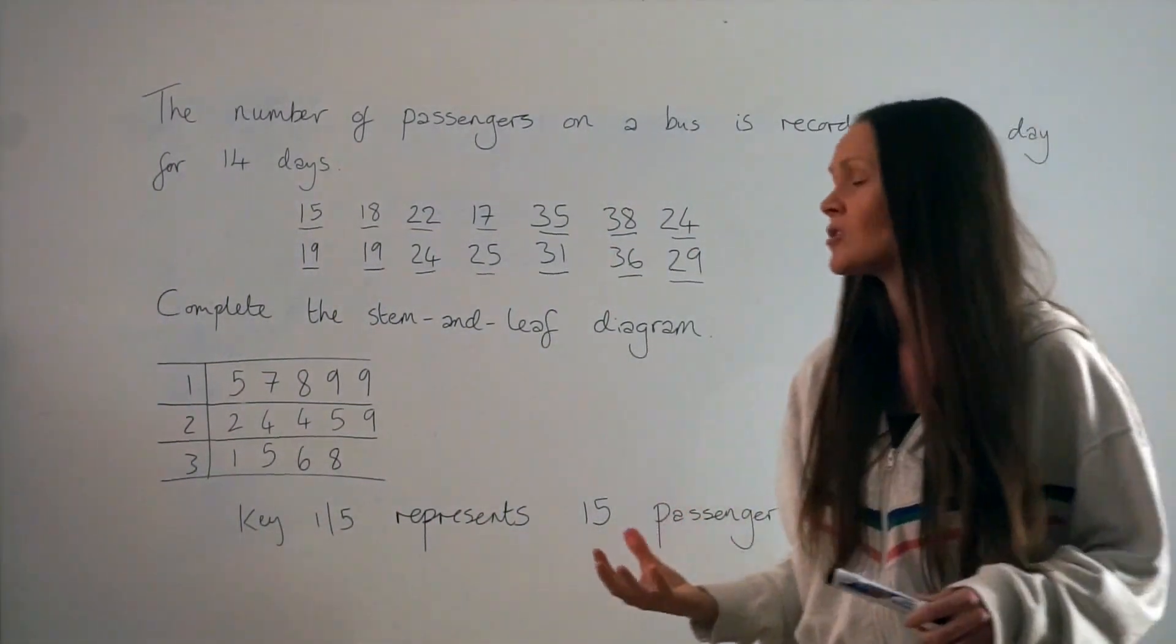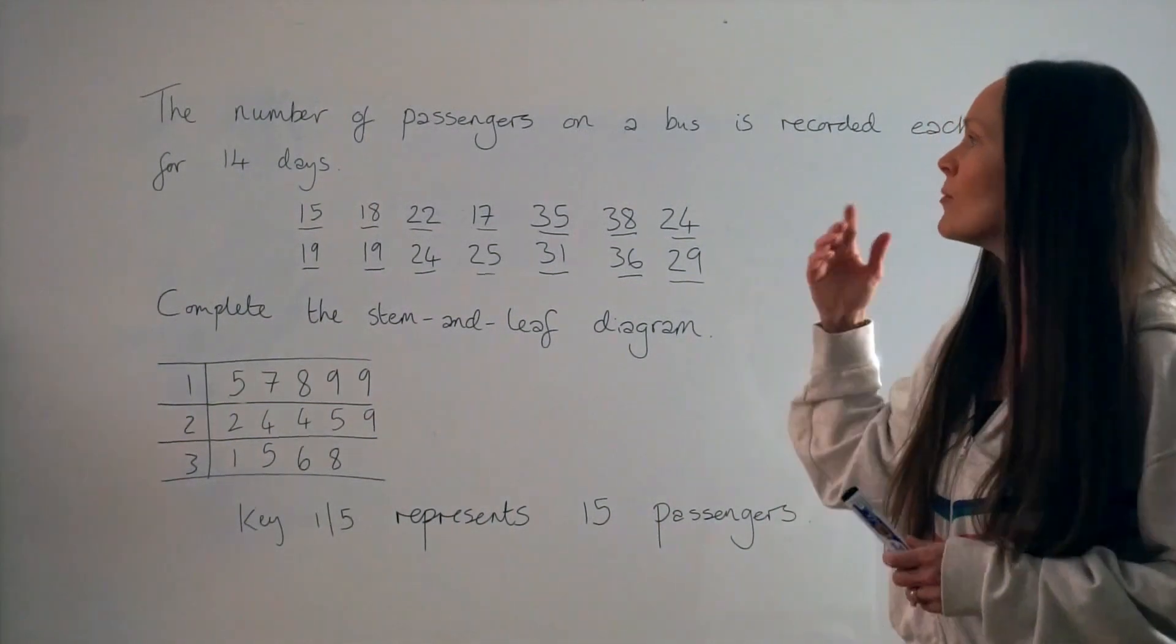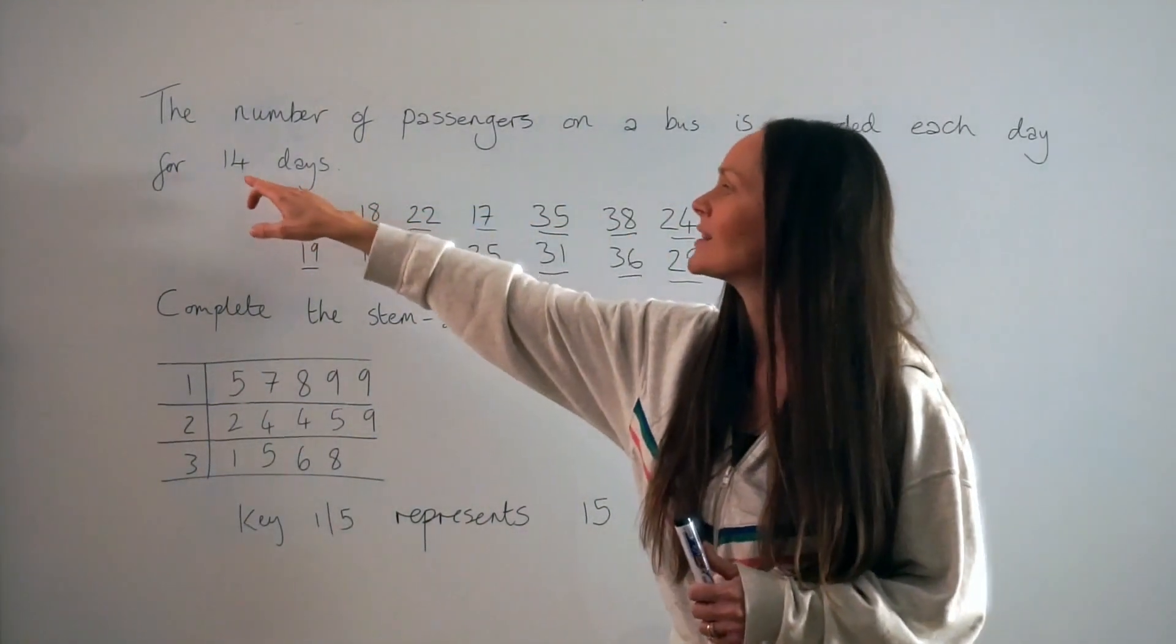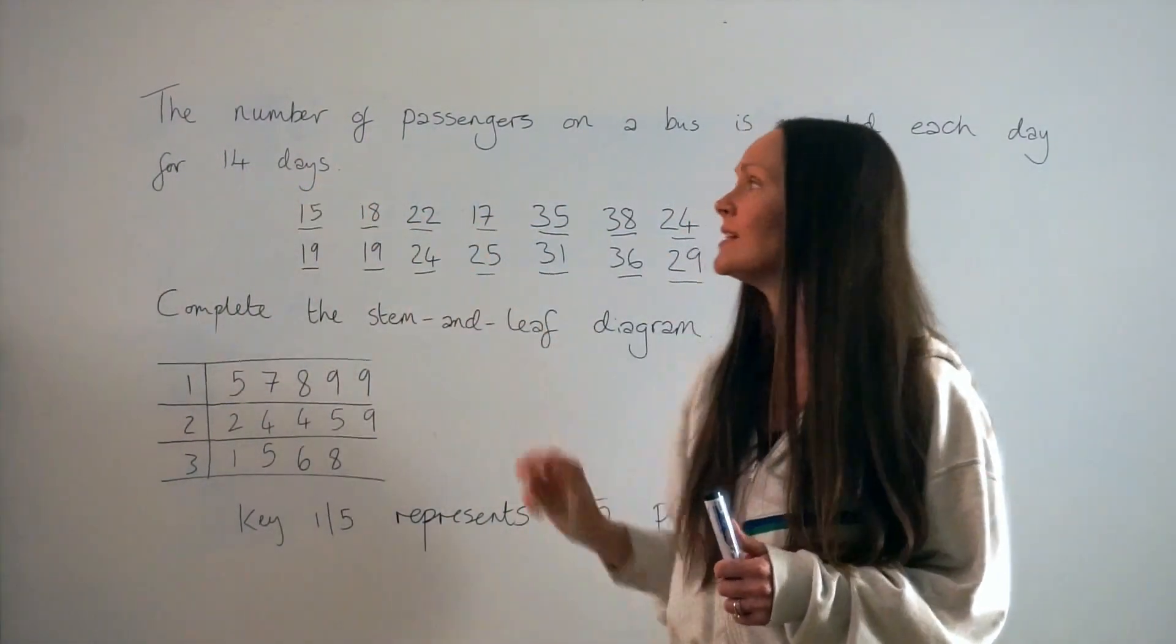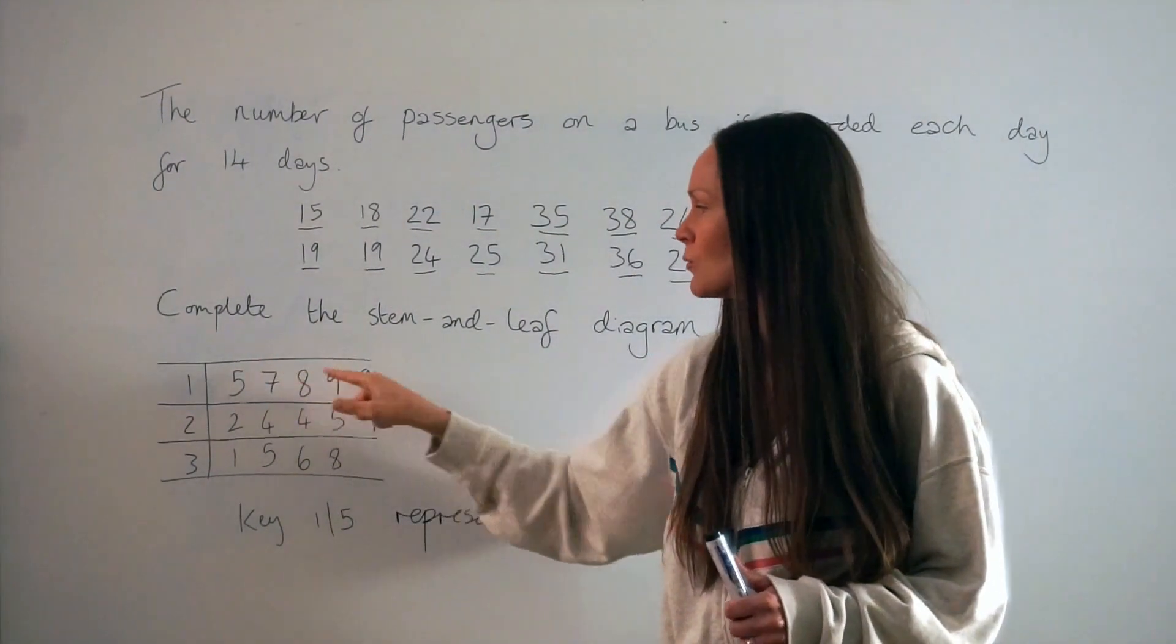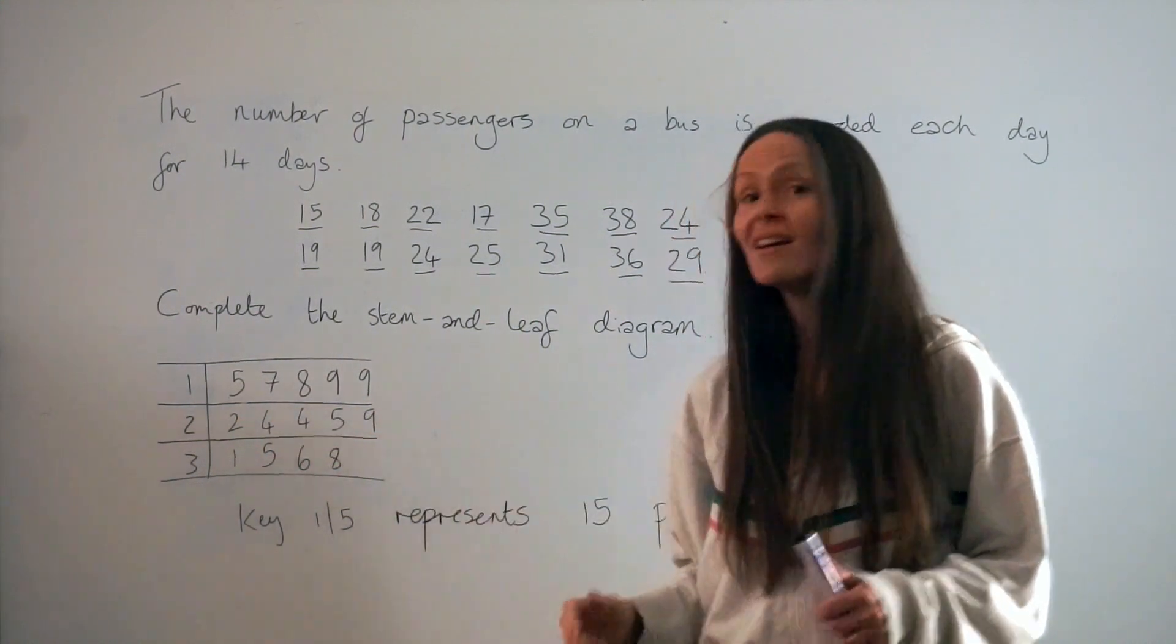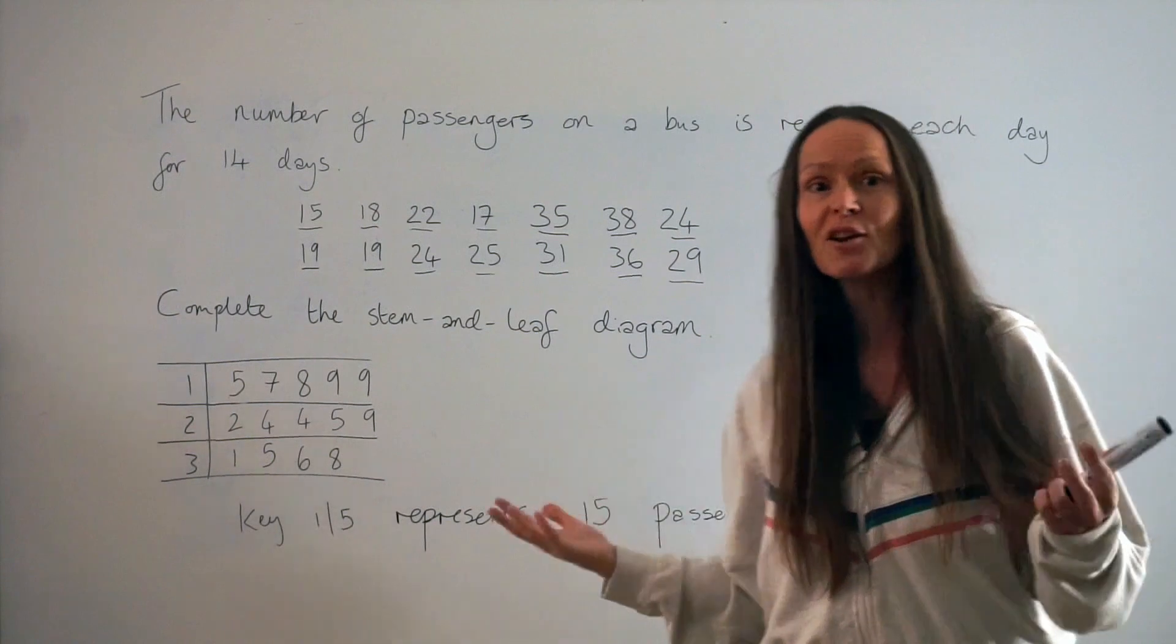A good little thing just to do at the end is to check that you haven't missed any numbers out. Remember at the beginning of the question it said the numbers were recorded for 14 days. So we know there are 14 numbers here. So just do a quick count. 1, 2, 3, 4, 5, 6, 7, 8, 9, 10, 11, 12, 13, 14. So I know I've done it correctly.